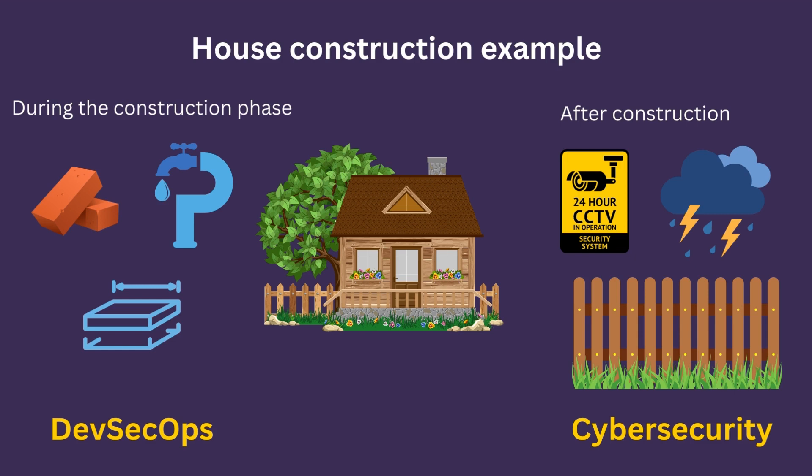From these two examples you can find a clear difference: the construction-phase security represents DevSecOps, and the post-build security represents cybersecurity. When you implement security best practices during the building of your software — like during the building of the house — that is DevSecOps. The security concepts that cover the overall application after it is deployed and during maintenance — that is cybersecurity. I hope the difference is clear. If you liked this video, click the like button and subscribe. We have a new video every week, so don't miss it. Thank you.